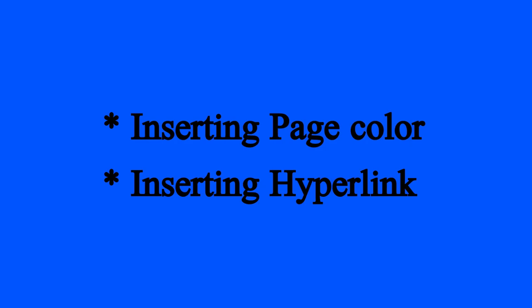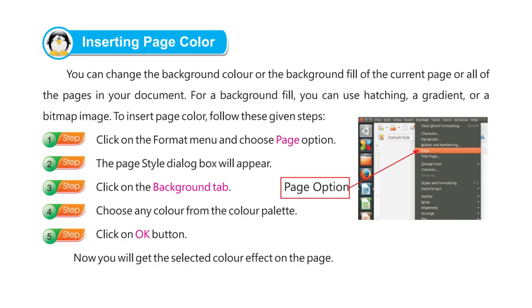Hello friends, today we are going to discuss about inserting page color and inserting hyperlink. You can change the background color or the background fill of the current page or all of the pages in your document. For a background fill, you can use hatching, a gradient, or a bitmap image.